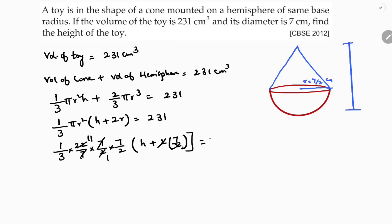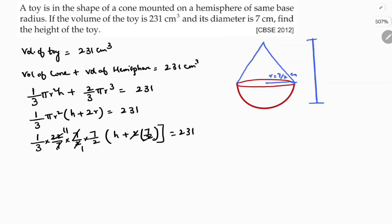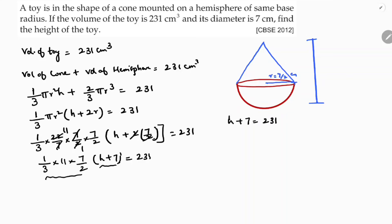Simplifying further: 1 by 3 times 11 times 7 by 2 into h plus 7 equals 231. Transposing the remaining values — 2 and 3 move from the denominator to the numerator — so division becomes multiplication with 11 and 7.